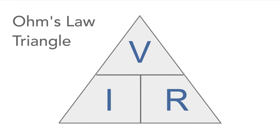When using this, simply highlight the value you want in some way or another, and look at the other variables. Let's see how this works. If we want voltage, highlight this, and it leaves I and R both at the bottom. As they are side by side, they are multiplied together.